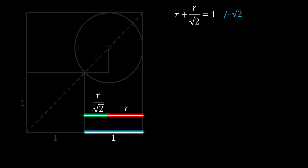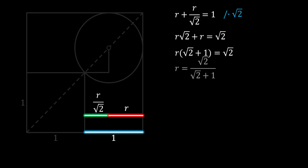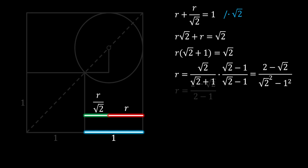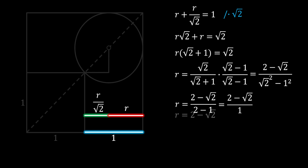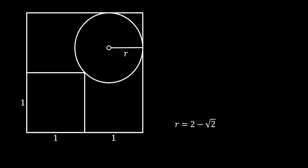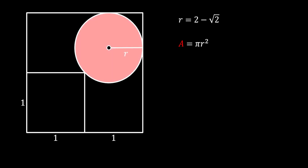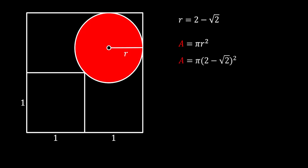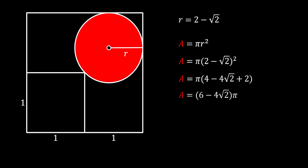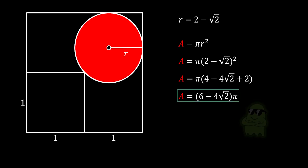We simplify by multiplying everything by square root of 2, pull out the common factor on the left, then divide. Rationalizing and working through it the same way as in the first method, we find that the radius equals 2 minus square root of 2. Using pi r squared, substituting r, expanding with the square of a binomial, and simplifying, we again get that the area of the red circle equals (6 minus 4 square root of 2) times pi — our solution.